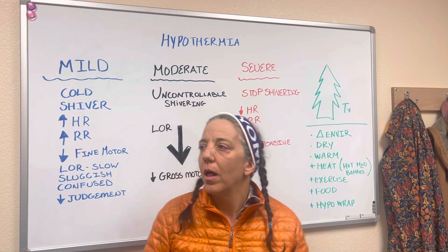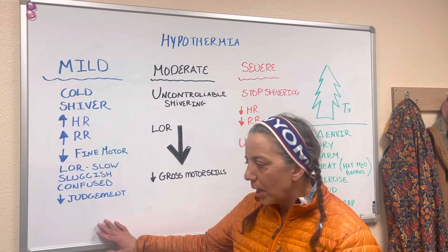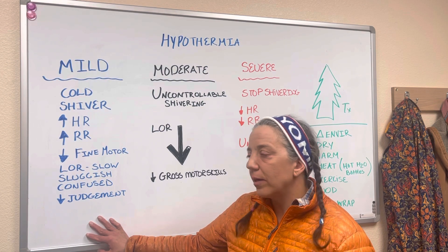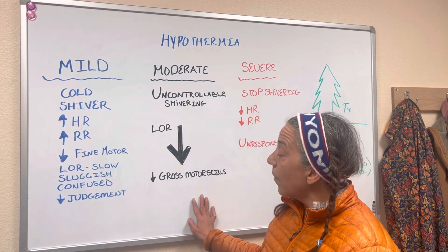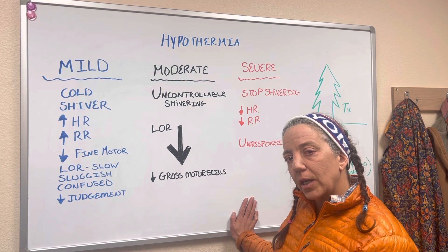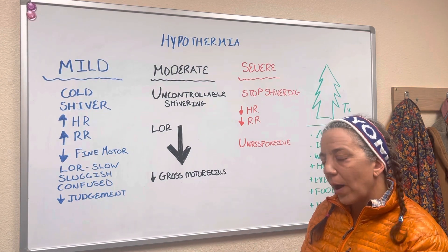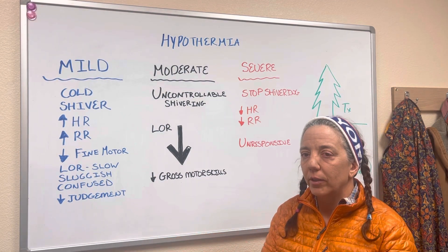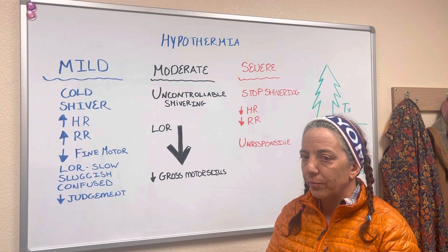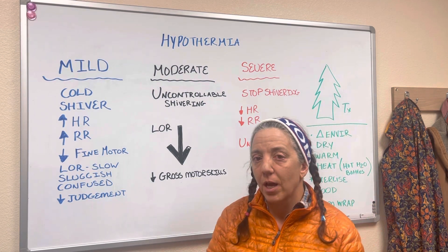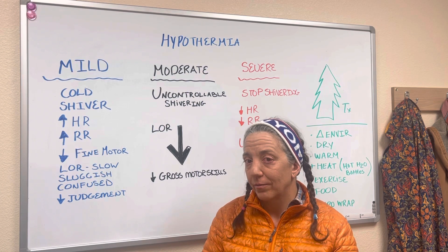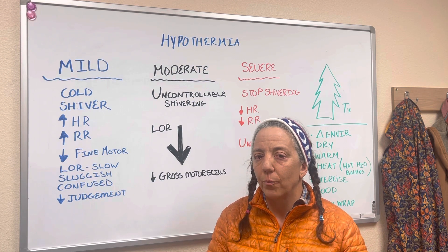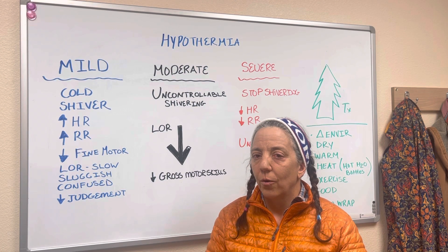The mild patient can help themselves, and this is something we want to identify early to prevent a bigger problem. The moderate and severe patient are going to need our help. The only patient that needs to be evacuated is your severe patient, or a moderate or mild patient that can't recover with some assistance. As always, prevention of hypothermia is preferred — so check the weather before you go, dress appropriately, and watch the video on preventing winter emergencies.